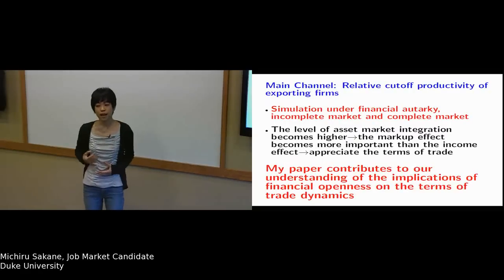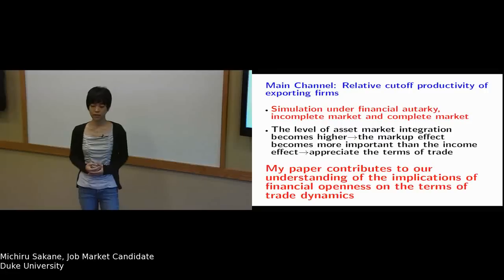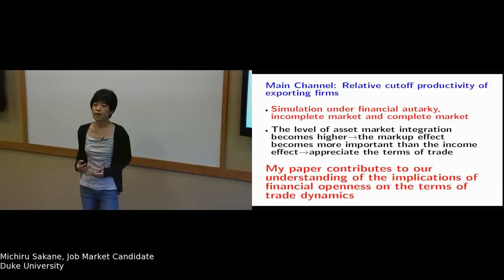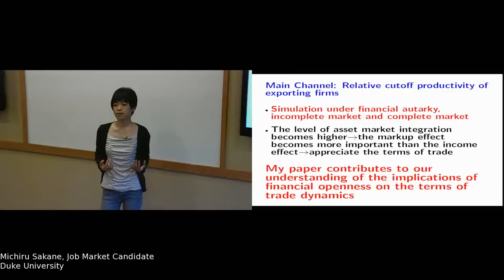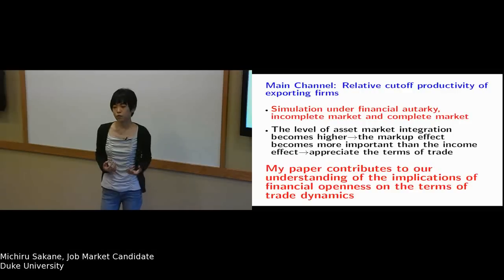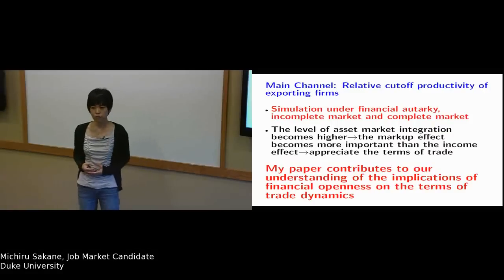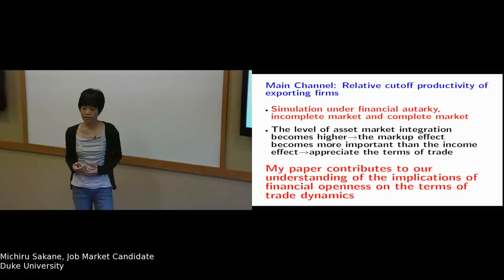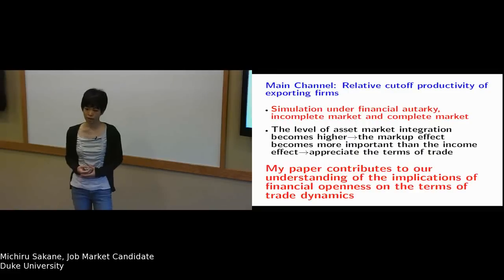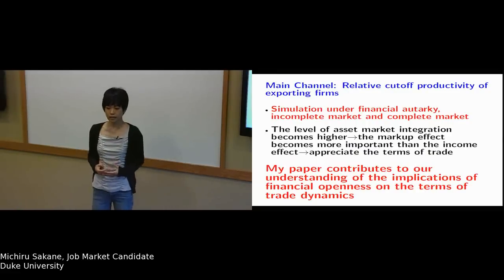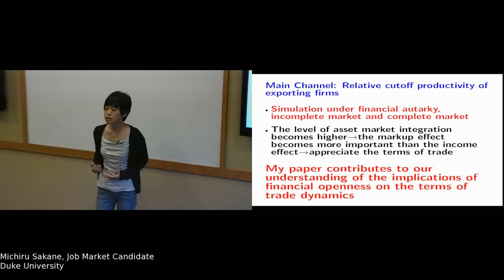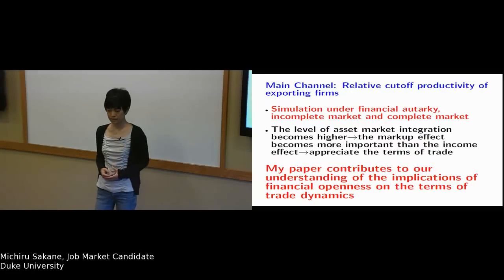Because if there is an aggregate productivity shock, it increases the income in the home economy, and that induces an increase in the demand for goods varieties. However, if you allow for trade in bonds — either under incomplete or complete asset markets — the income effect is mitigated because there is international risk sharing between the two countries.